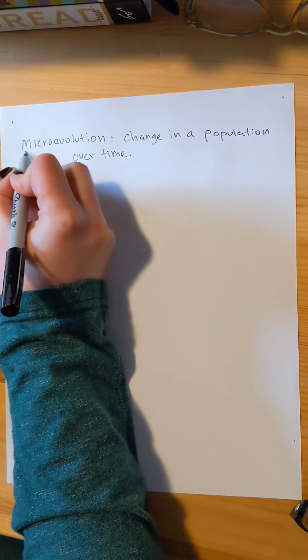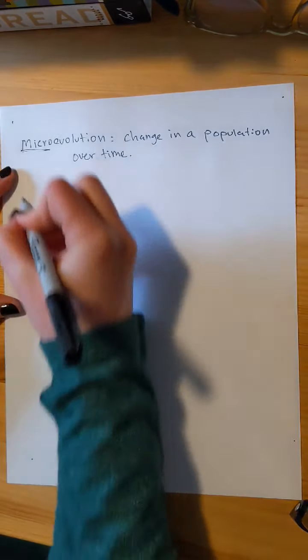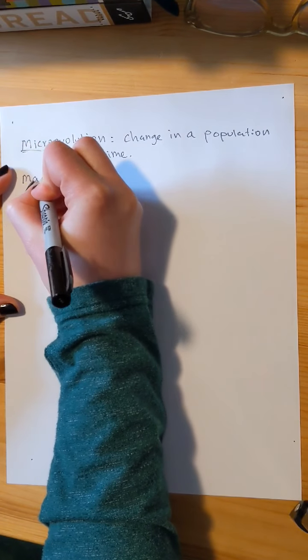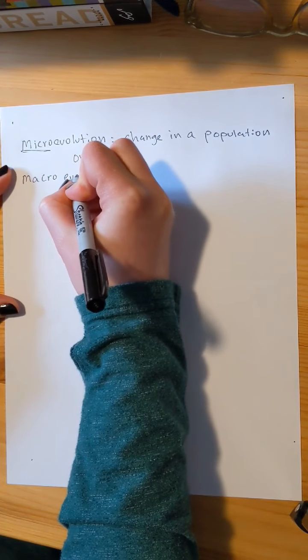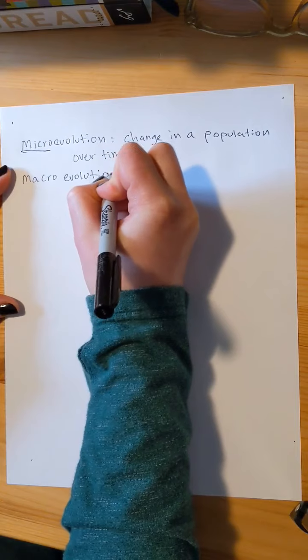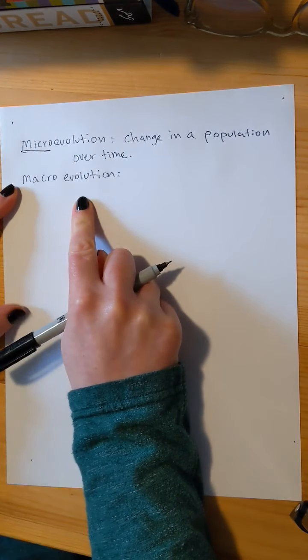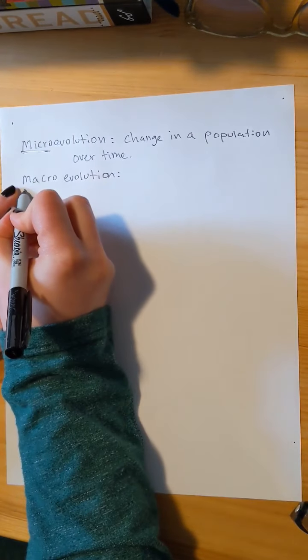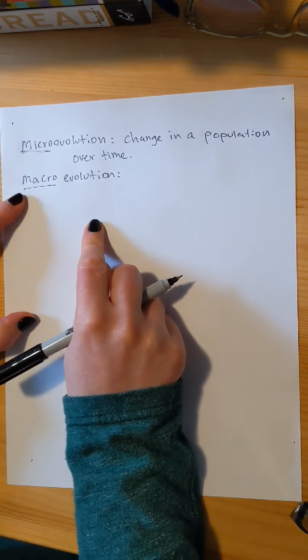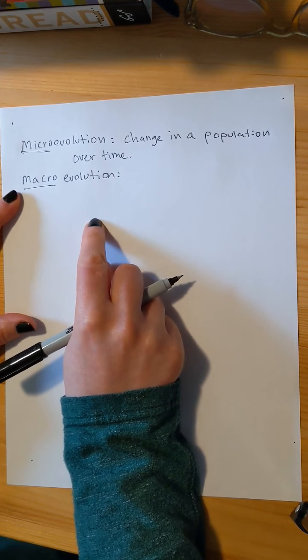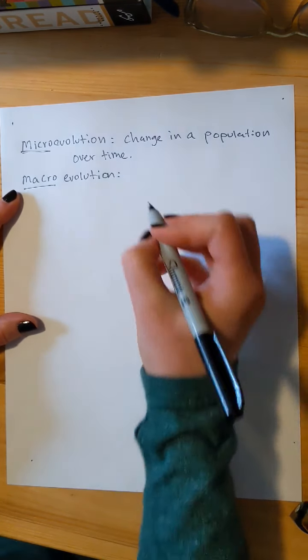If we have microevolution, that implies that we also have macroevolution. Macro being small, macro being big. Macro evolution is the formation of a new species.